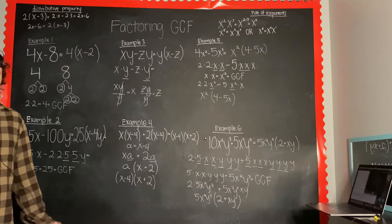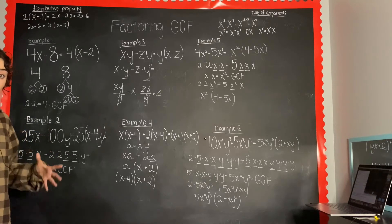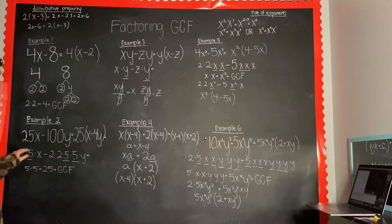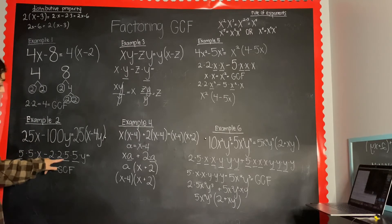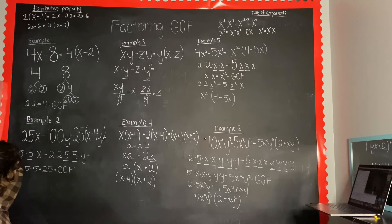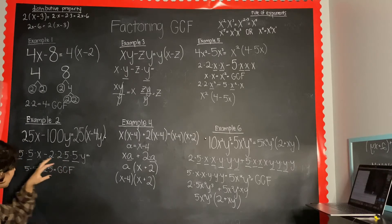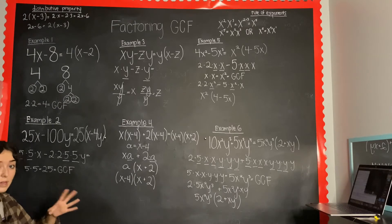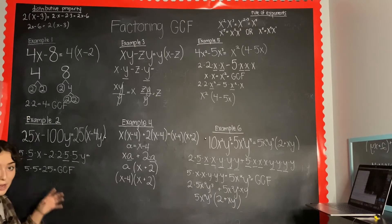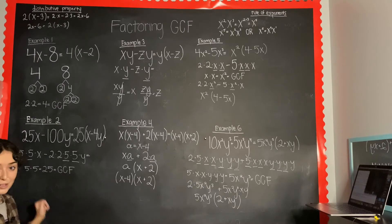For the next example I don't use a factor tree because I can see the prime factors in my head, but pause if you need to. The prime factors of 25 are 5 and 5, and the prime factors of 100 are 2 times 2 times 5 times 5. I've written them out with the variables so we can see the common factors more easily. There are no variables in common, but they both have two 5's.